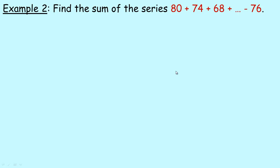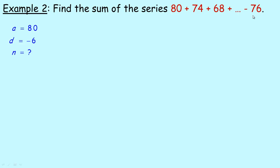Example 2: find the sum of the series 80 + 74 + 68 + ... down to −76. The first term is 80, and we're subtracting 6 each time, so the common difference is −6. It's definitely an arithmetic series. However, we don't know n because we aren't told it directly as in the previous example. Since we do know the last term is −76, we can find which term number it is — that will give us n. We use the general term formula (not the sum formula) to find which term −76 is.